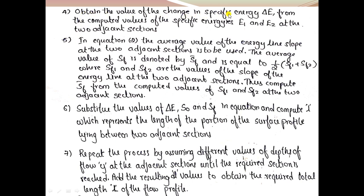We then obtain the change in specific energy ΔE, which is the difference in specific energy between the two sections E1 and E2. The average value of the energy line slope SF bar equals half the sum of SF1 and SF2 at the two adjacent sections. We then substitute ΔE, S0, and SF bar into the equation to compute L, the length of the profile between the two sections.